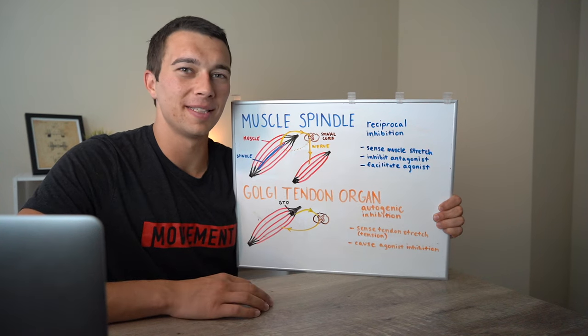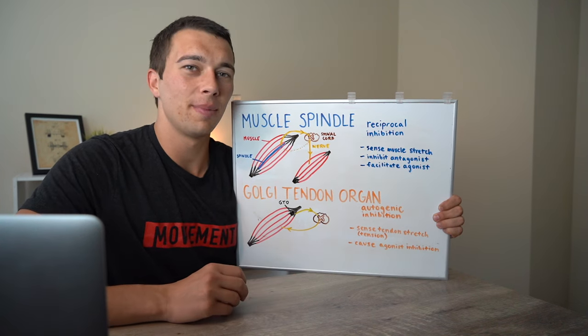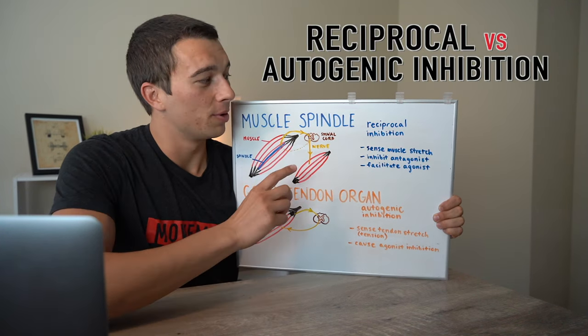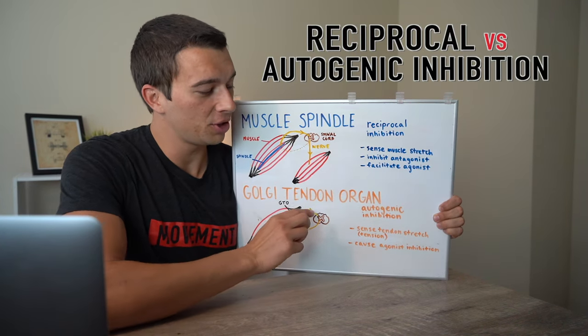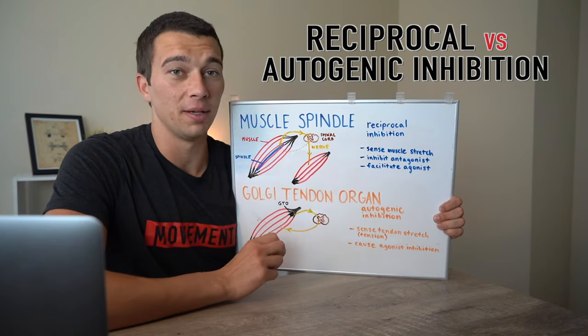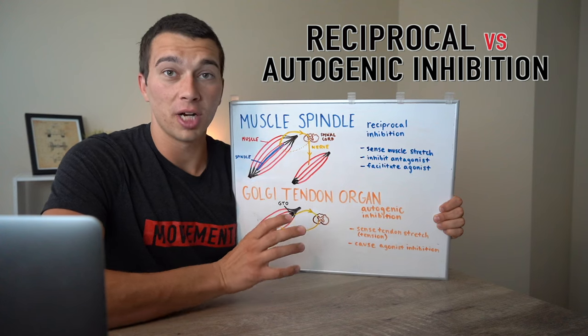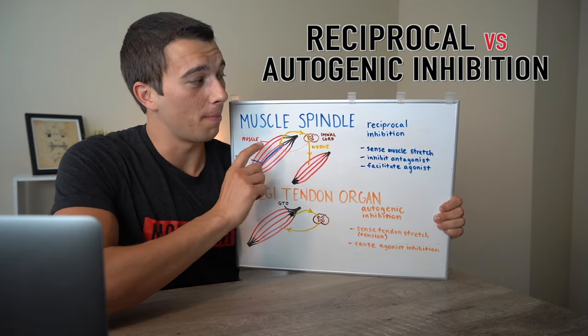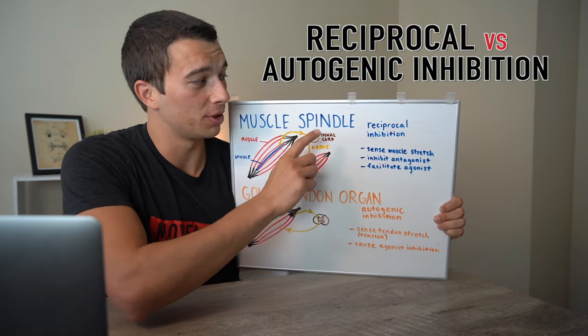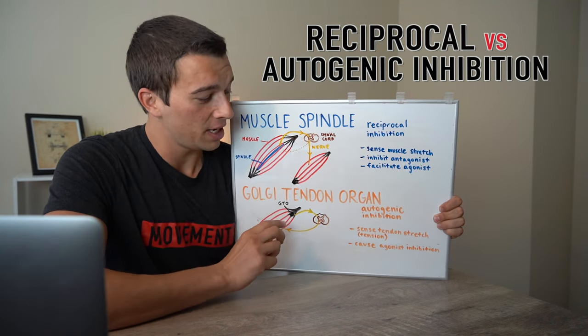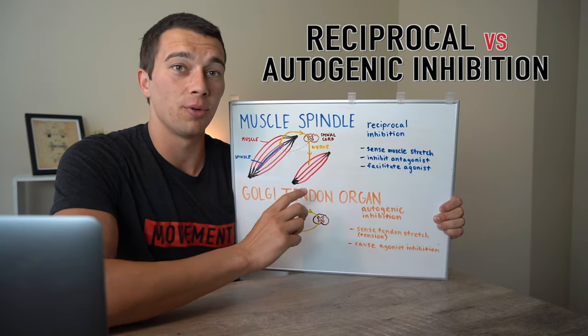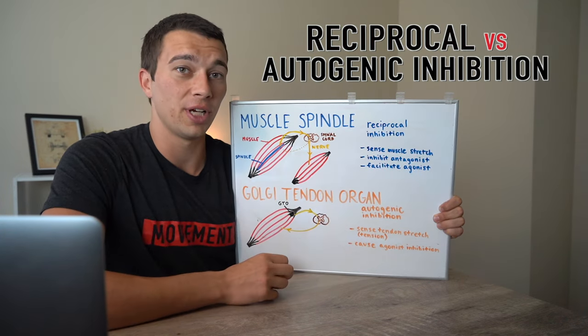Hey, what's up guys, Matt with the Movement System. Today we're going to talk about the difference between reciprocal inhibition and autogenic inhibition — exactly how the muscle spindles do reciprocal inhibition and the Golgi tendon organs do autogenic inhibition. Let's go ahead and dive into it.